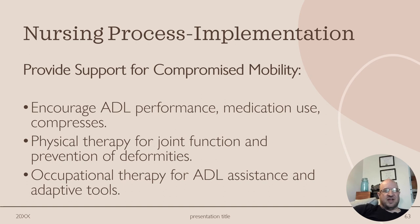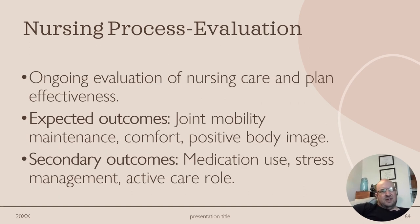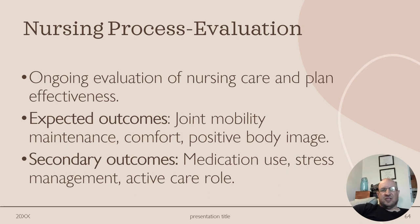For supporting compromised mobility, encourage ADL performance, medication use, and physical therapy for joint function and prevention of deformities, and occupational therapy for ADL assistance and adaptive tools. Evaluation involves ongoing assessment of nursing care and plan effectiveness, adjusting as needed. Expected outcomes include joint mobility maintenance, comfort, and positive body image. Secondary outcomes include medication use, stress management, and an active care role.